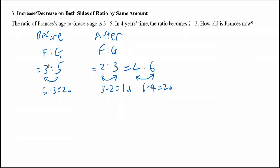So from here, it's very clear that Francis increased by 1 unit. 3 to 4 is 1 unit. At the same time, Grace also increased by 1 unit, from 5 to 6.